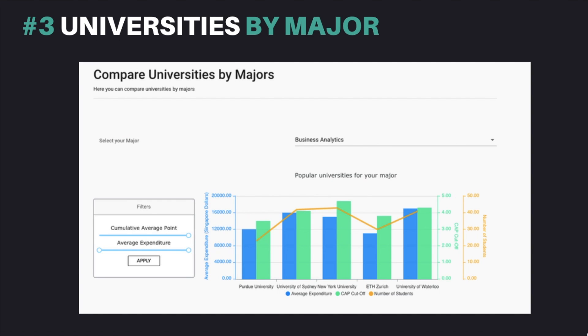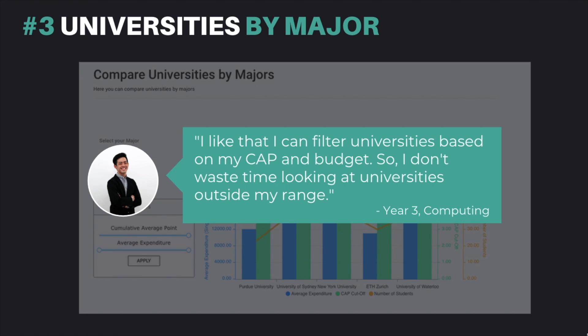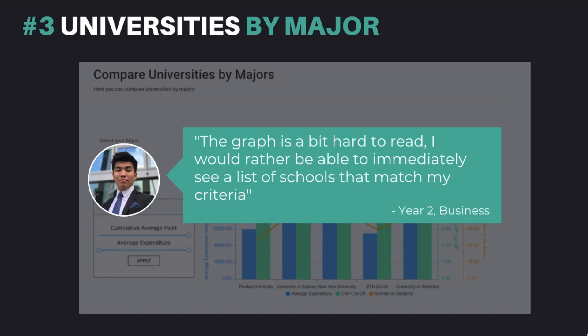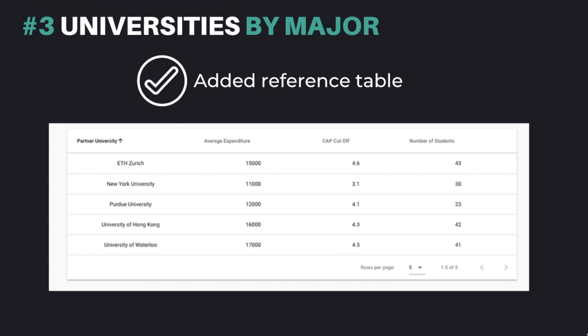Our third place feature is universities by major. Users' feedback indicated that this feature addressed their problem of wasting time looking through a long list of partner universities and applying for unsuitable universities. Since CAP, budget, and suitability to their major were their main considerations when choosing a university for exchange, we created filters that allowed users to filter out universities that did not fit their requirements. However, users disliked that the information was presented in a graph as it was counterintuitive. Thus, we added a table of all universities for students of their major for easier reference.